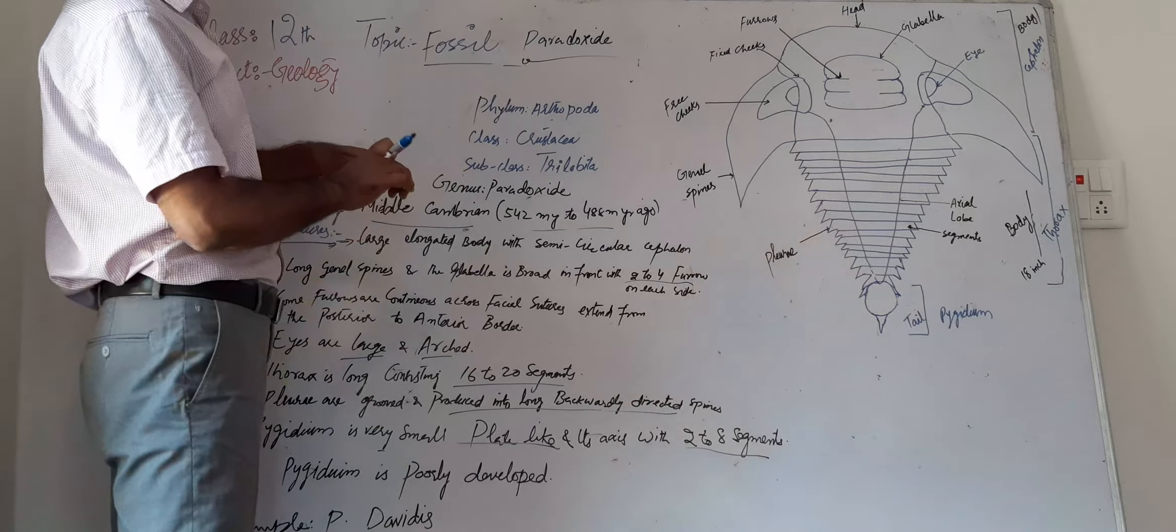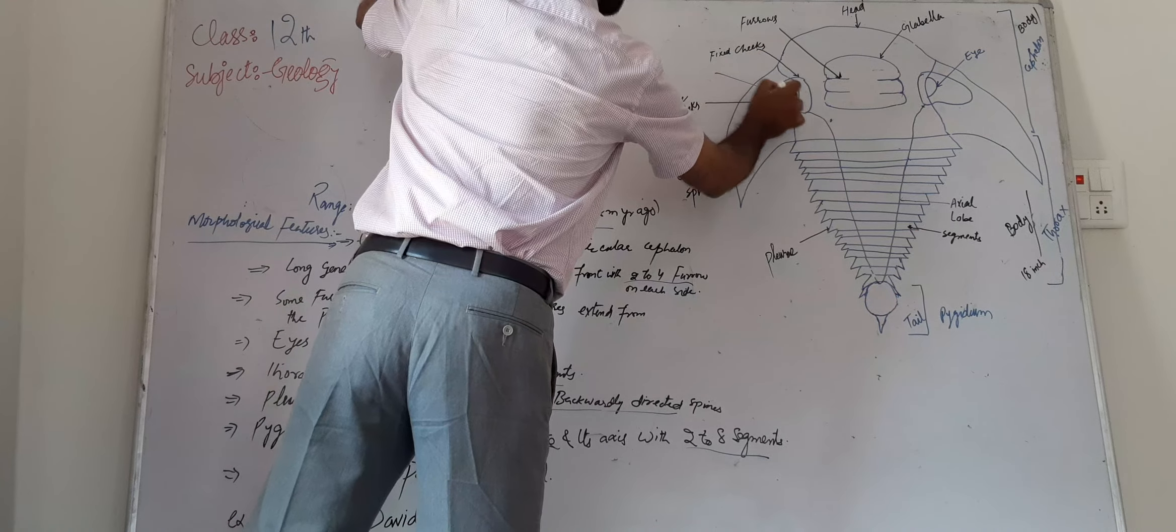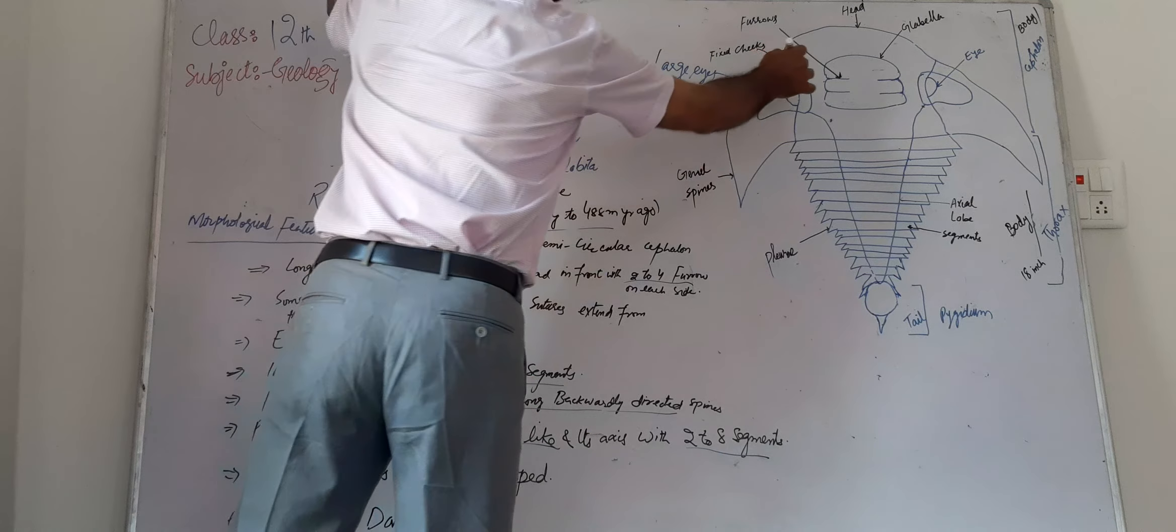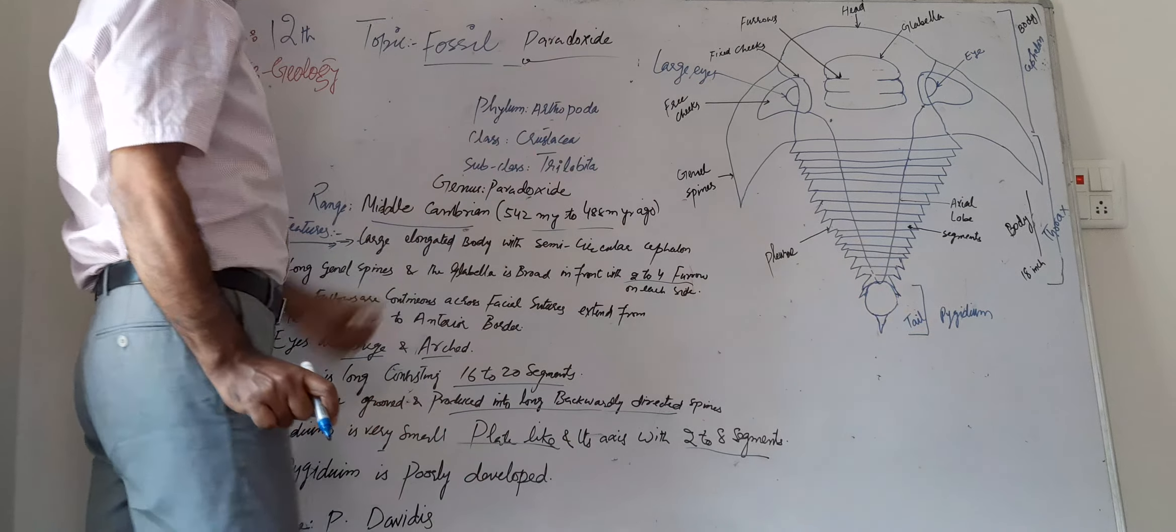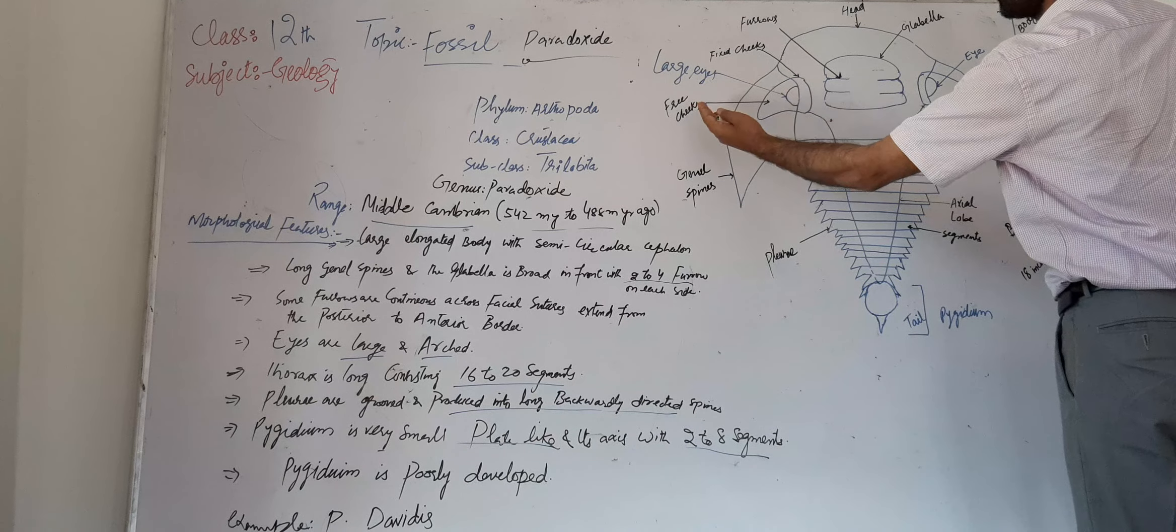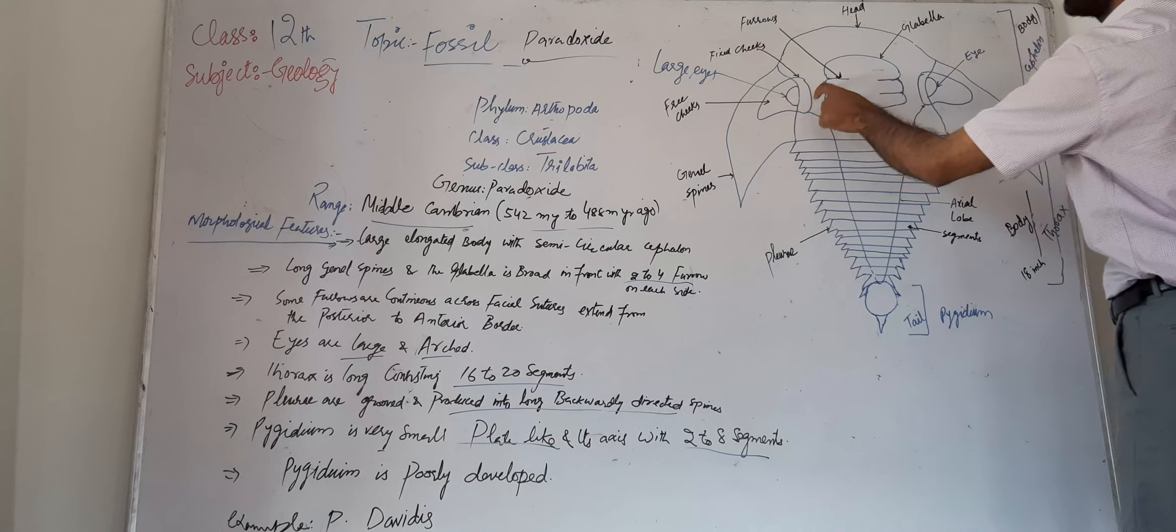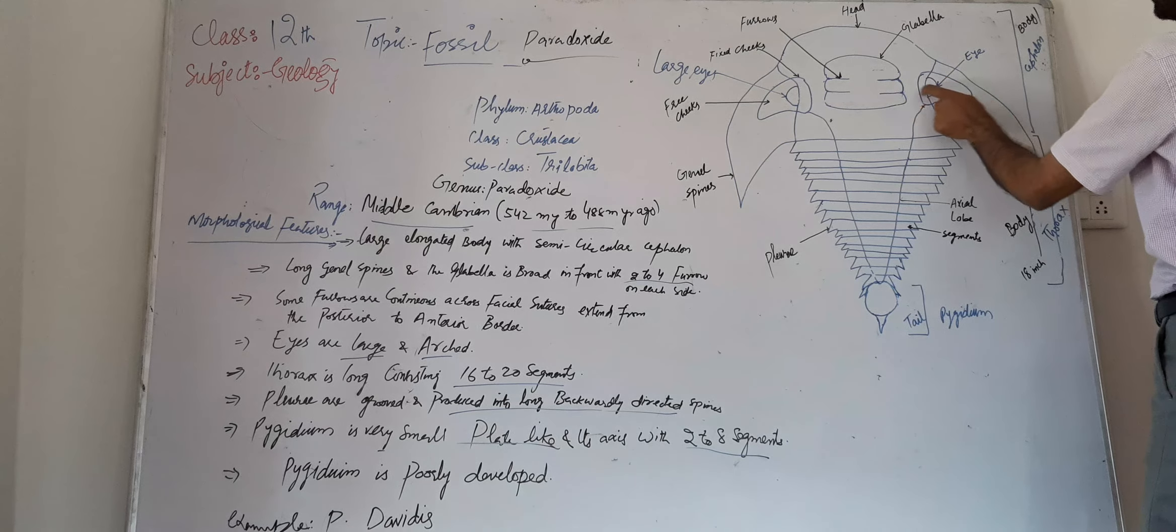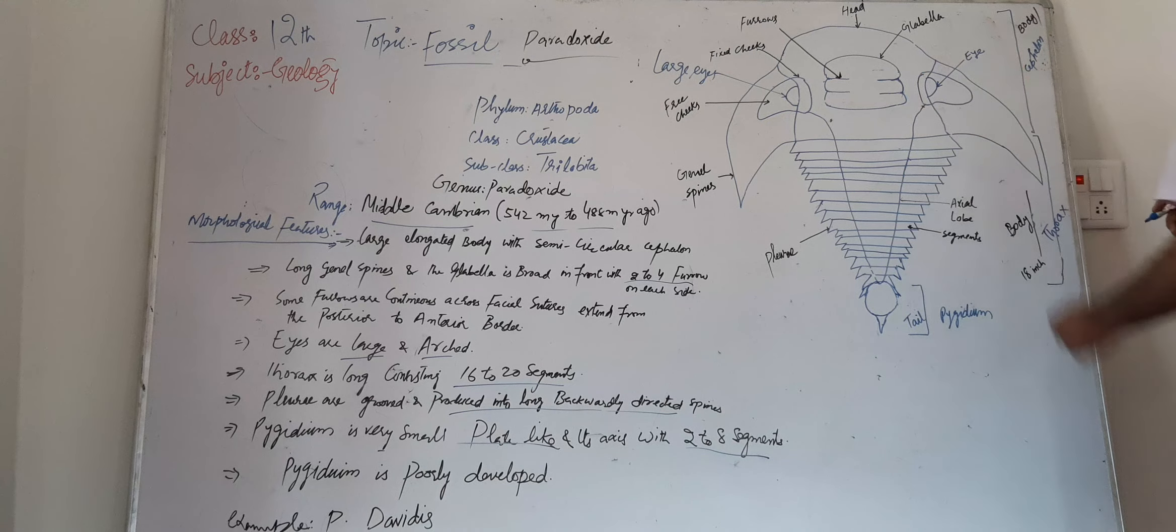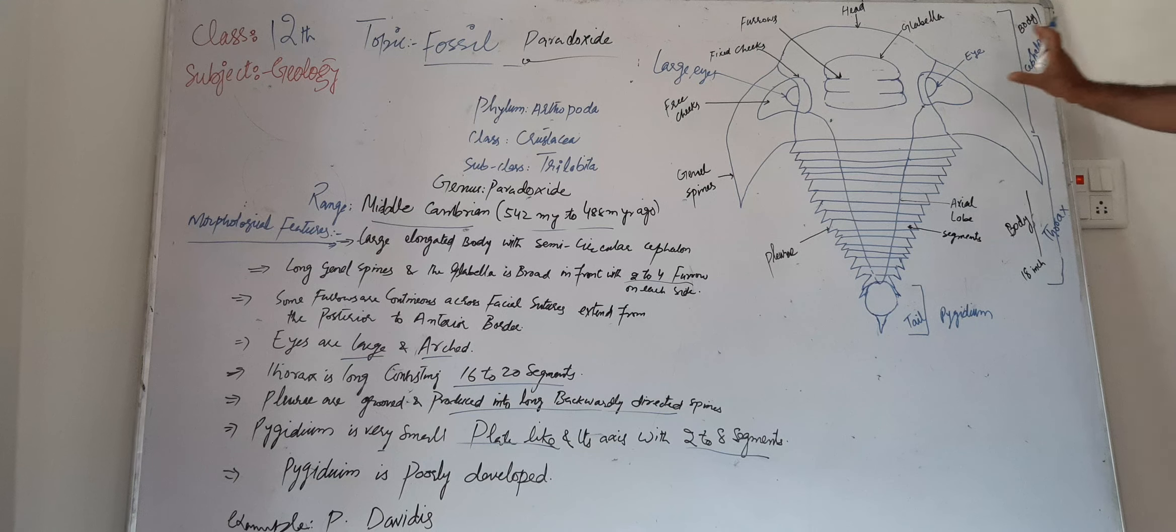When we see the eyes, the eyes are large with arched shape. There are free cheeks on the outer side of the eyes and fixed cheeks on the inner side of the eyes. So this is the head—it contains glabella, eyes, cheeks, and other parts like furrows.